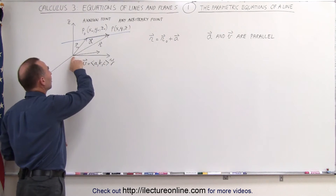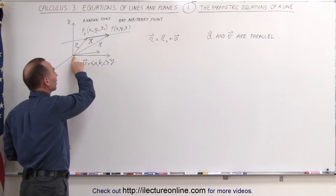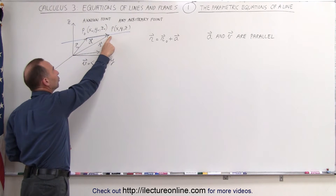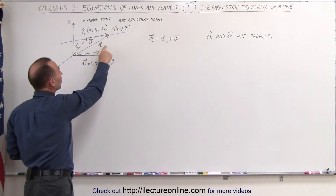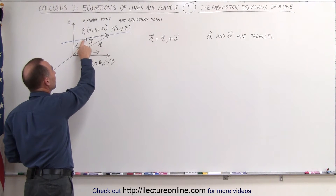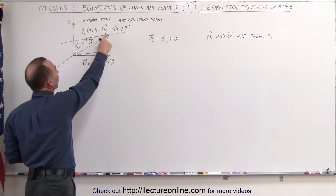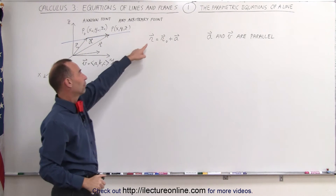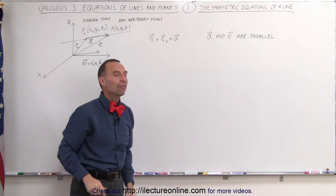If we draw a position vector to the known point called r sub naught, and then we draw another position vector from the origin to the unknown arbitrary point — call that r — you can then see that the vector r is simply the vector sum of the vector to the known point added to the vector going from the known point to the arbitrary point. Therefore, vector r is equal to r sub naught plus the a vector.